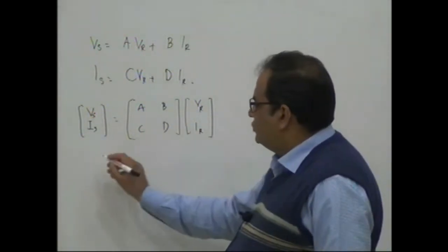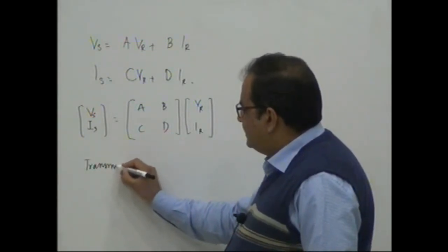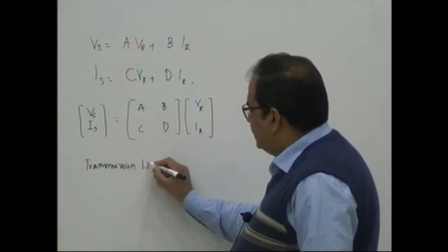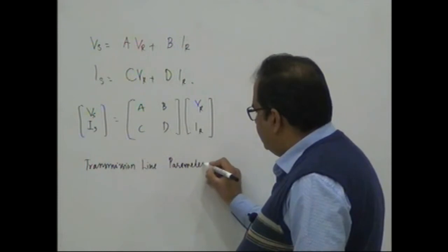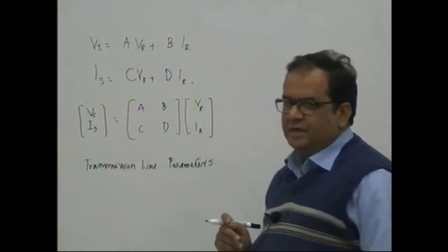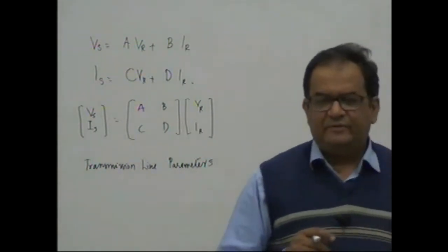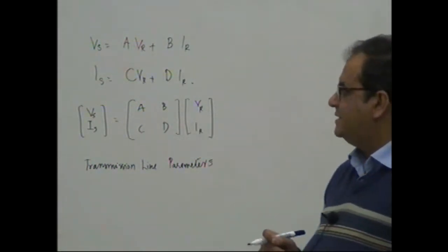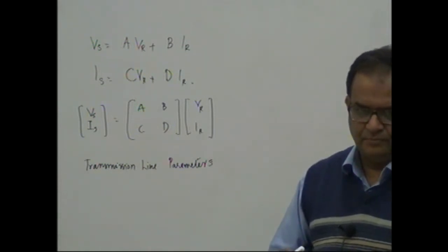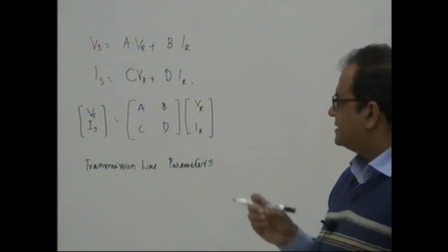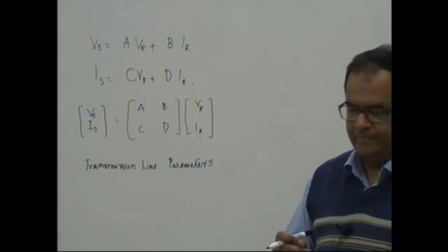These A, B, C, D parameters are also known as transmission line parameters. Since we are dealing with AC quantities, A, B, C, D can also be complex numbers. Similarly, Vs, Is, Vr, and Ir are in phasor form or complex numbers.